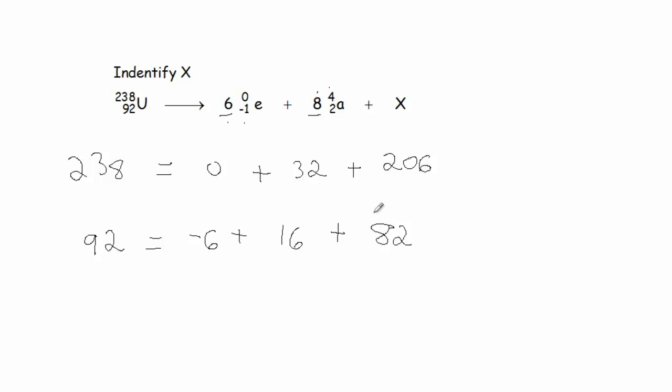Well, there's no particle that has 82 protons, but there is a particular isotope that does. And this, if you look up in the periodic table, 82 is associated with lead. So, the identity of X, in this case, is going to be lead 206.